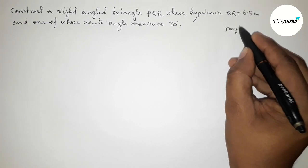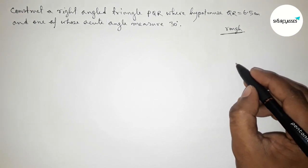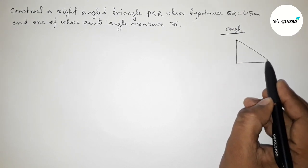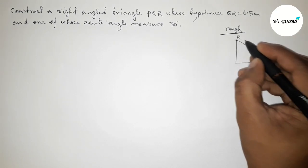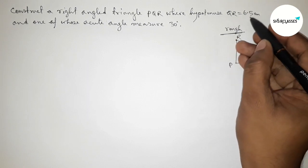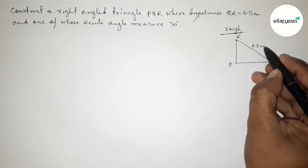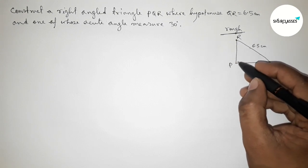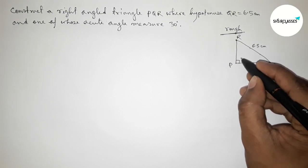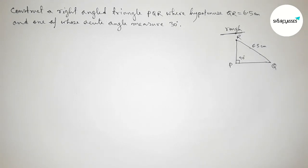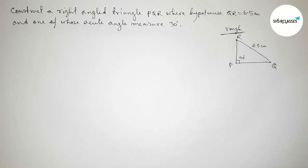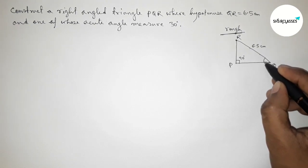First, roughly discussing some important calculations. Drawing a right angle triangle roughly — taking point Q, R, and P. The given hypotenuse QR equals 6.5 centimeters. The angle opposite to the hypotenuse is always 90 degrees. One of the acute angles is 30 degrees, so we can take angle Q or angle R as 30 degrees. Here I am taking angle Q equals 30 degrees.